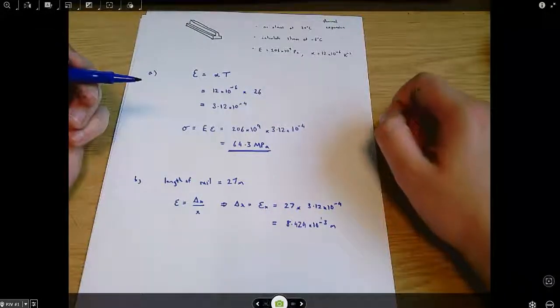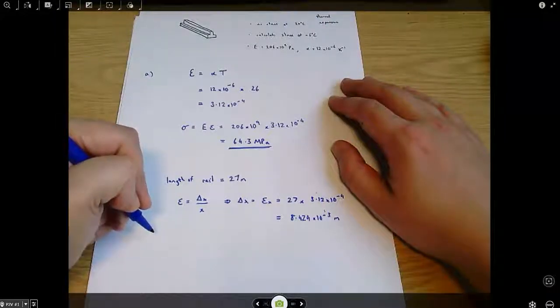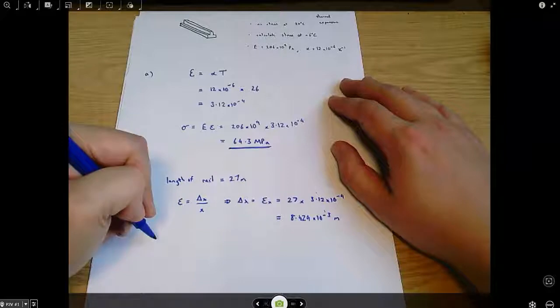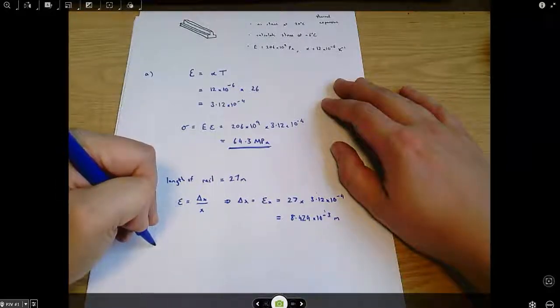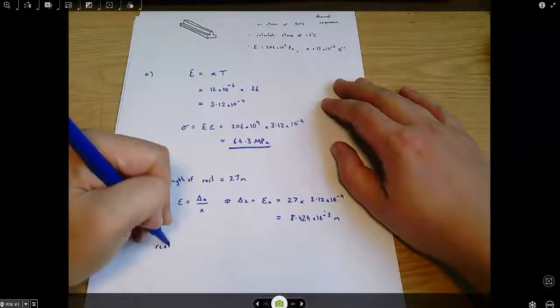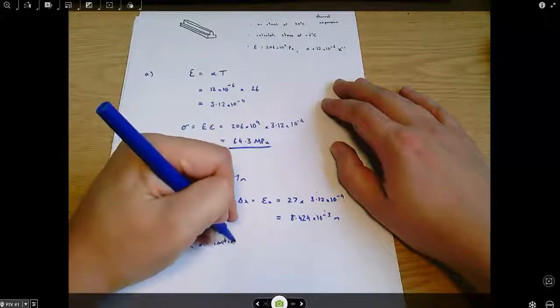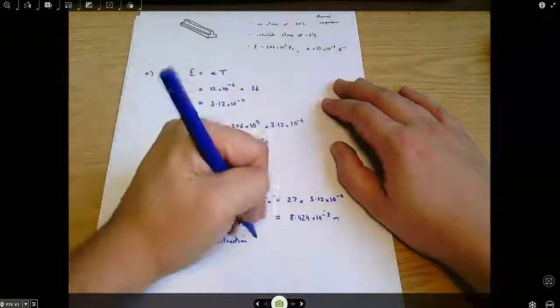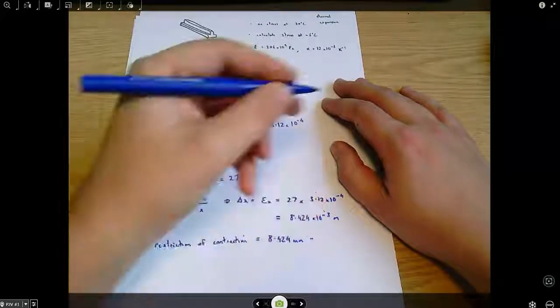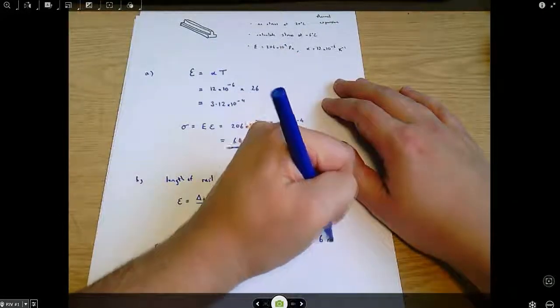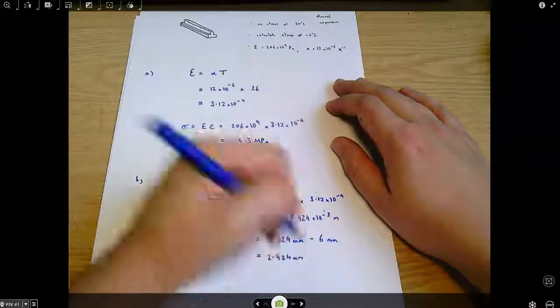And we're told that there's a 6 millimetre allowance, so we can say, OK, the restriction on contraction is the 8 millimetres that it wants to contract minus the 6 millimetres that it's allowed to contract. So, there's basically 2.424 millimetres that it can't contract.